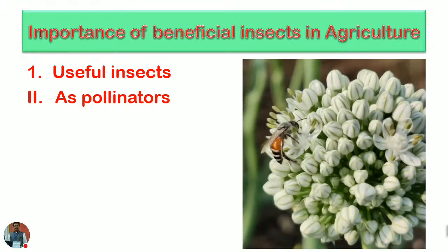Some insects act as pollinators, carrying out this activity unknowingly, which is very important for us. As insects pollinate plants, flowers are pollinated, seeds and fruits are obtained, and agricultural production is higher. One study states that for every $1 worth of honey honey bees produce, they generate nearly $20 worth of indirect benefit through pollination. Therefore, conservation of these pollinators is very, very important.